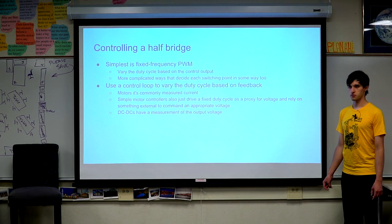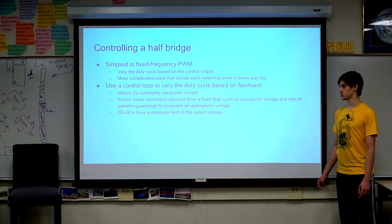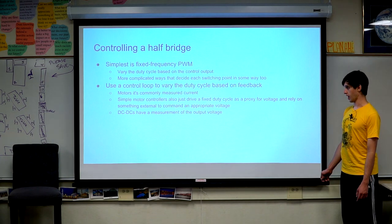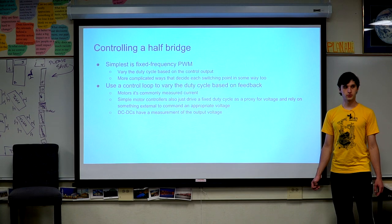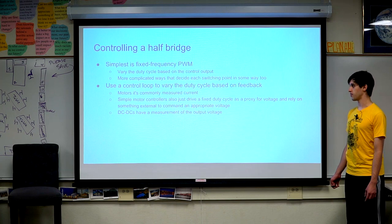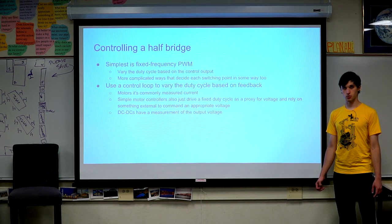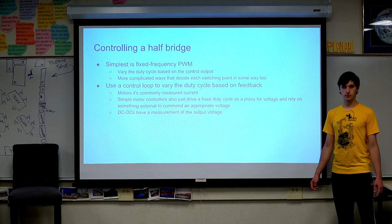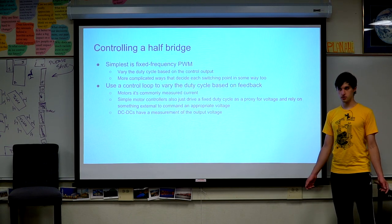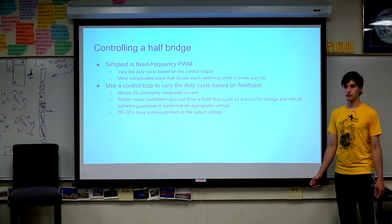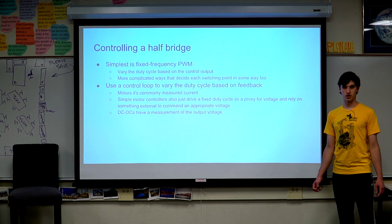If it's a control loop you need some form of feedback. For just driving a motor it's common to measure current, or for simple motor controllers you can just vary the duty cycle — the duty cycle you set basically determines the voltage you put across the motor. For DC-DC converters — which are essentially the same thing — you measure the output voltage and use that to determine what duty cycle to switch at. In general you use software to implement that control on a robot and there are many choices for how to do it.